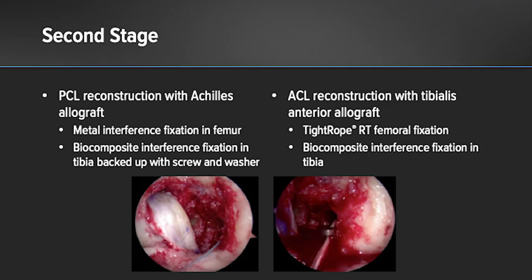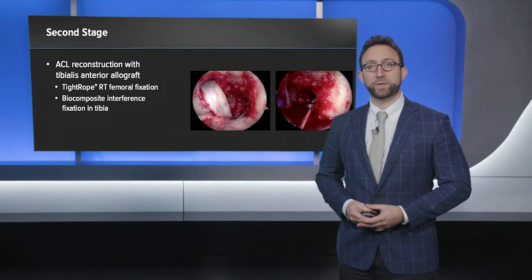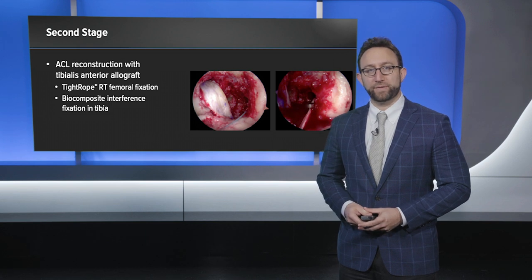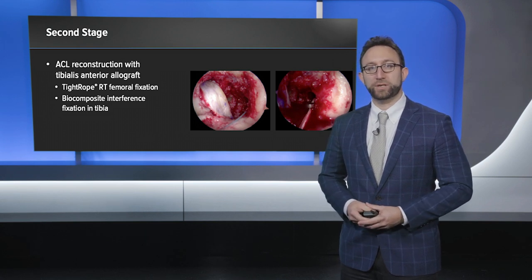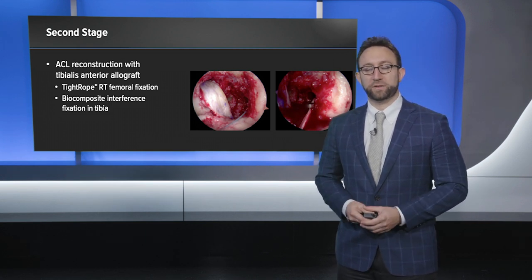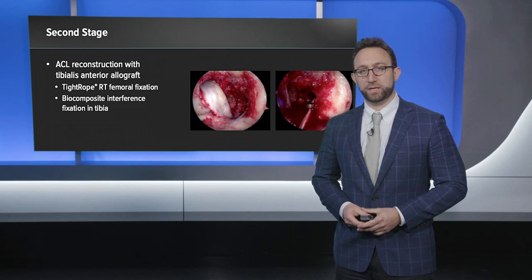For this patient, we returned two months postoperatively to allow motion to return and performed a combined PCL and ACL reconstruction. The PCL was reconstructed with Achilles tendon allograft, using a metal interference screw in the femur and a biocomposite interference screw in the tibia backed up with a screw and washer. For the ACL, we used tibialis anterior allograft, fixed with a TightRope RT on the femur and biocomposite fixation distally in the tibia.